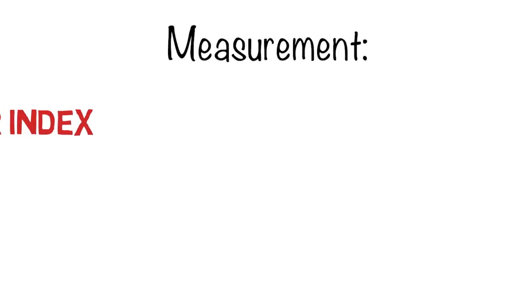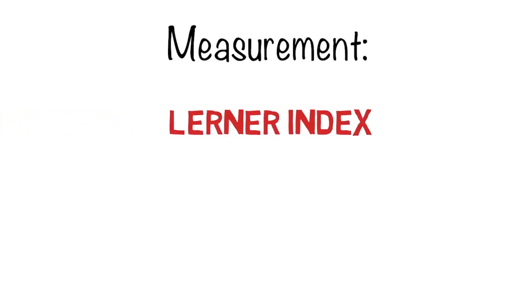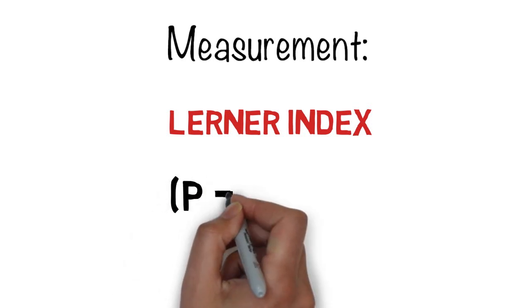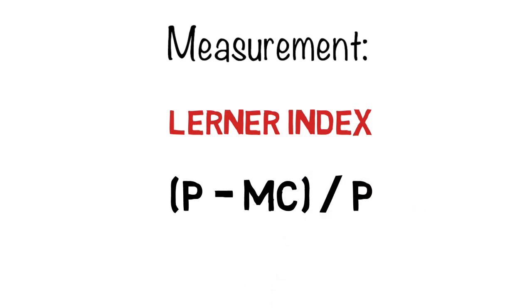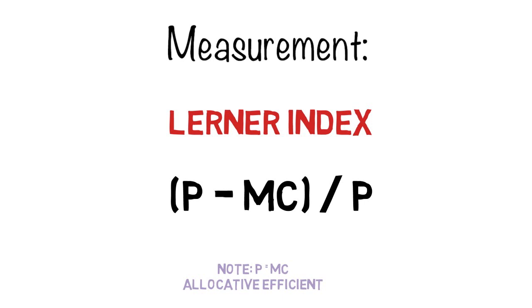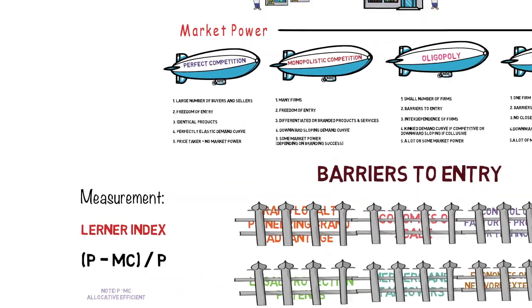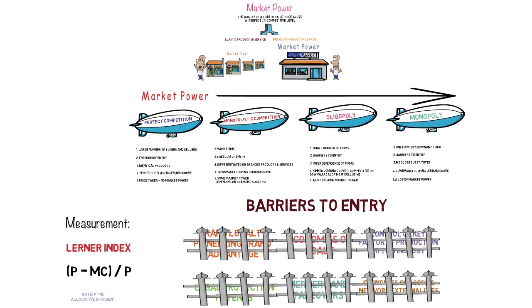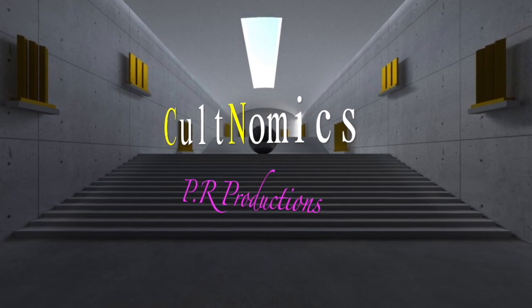How do we measure market power across markets? We use a measurement device called the Lerner Index. It compares the selling price of a product to its marginal cost, and we divide that difference by price. The larger the divide between price and marginal cost, the more market power a firm has. This markup of price over marginal cost represents market power, and it moves away from allocative efficiency — the higher the price over marginal cost, the less efficient the firm is.